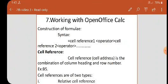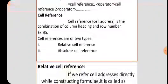Cell reference means the cell address - it is the combination of column name and row number. Cell references are of two types: relative cell reference and absolute cell reference. First, let's look at relative cell reference.